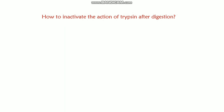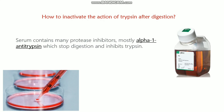Next is how to inactivate the action of trypsin after digestion. Serum contains a protein called alpha-1 antitrypsin that stops the digestion and inhibits trypsin. This alpha-1 antitrypsin is present in the serum and acts as a protease inhibitor. After trypsinization, when the cell is properly digested, you just need to add complete media or serum to stop the digestion.